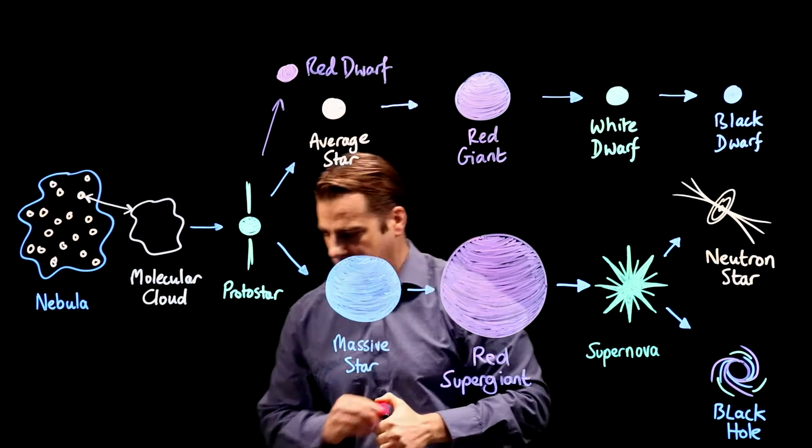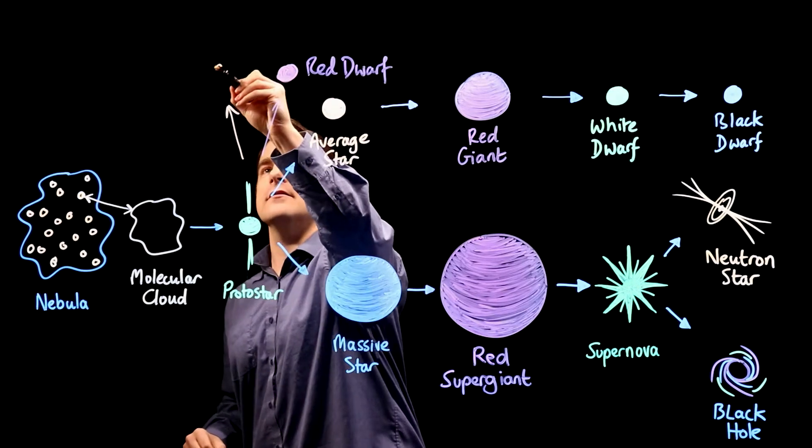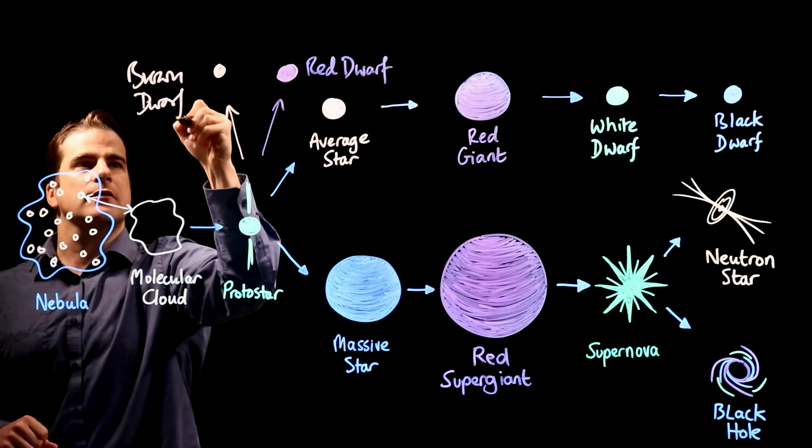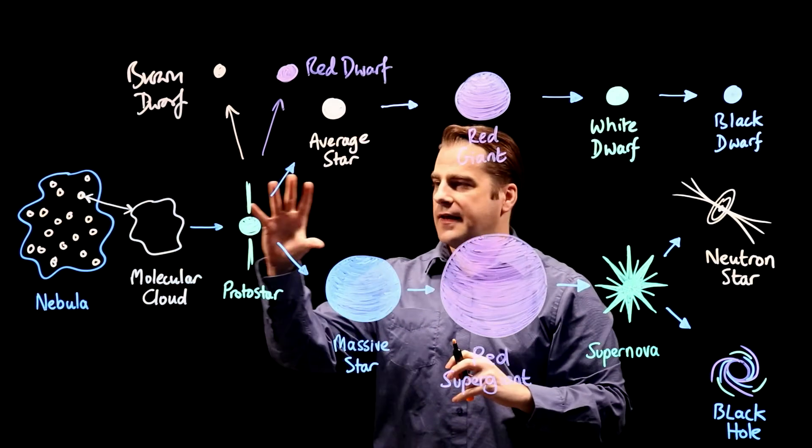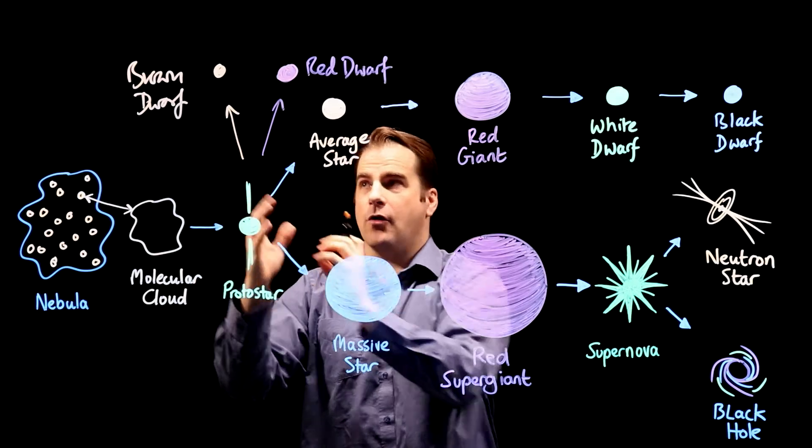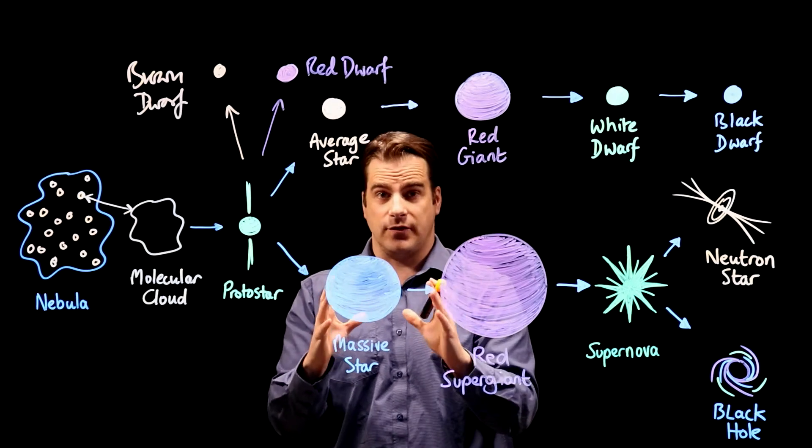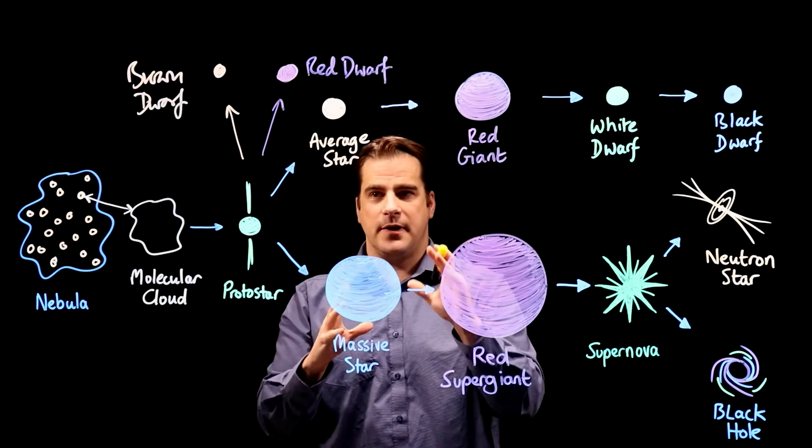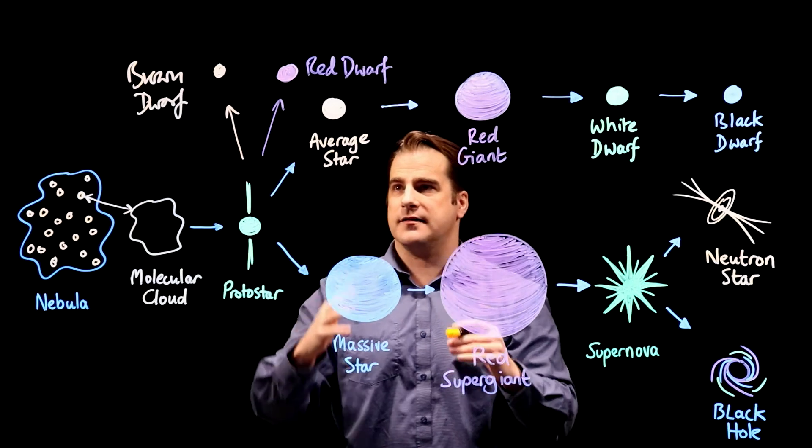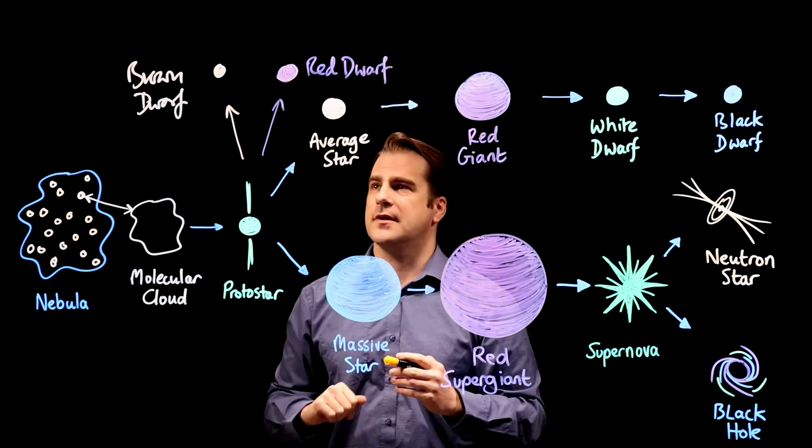Also you can get brown dwarves. And a brown dwarf is when, if there's less than about 10% of the mass of the sun, then the molecular cloud and protostar will form a brown dwarf. These are not quite big enough for hydrogen fusion to take place. You can get a bit of deuterium fusion apparently in them, but they don't have the same main power source that stars bigger than about 10% the size of our sun have. Red dwarves, our sun, average stars and massive ones.